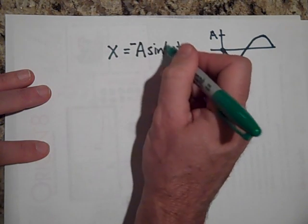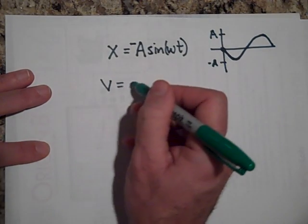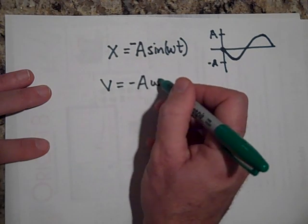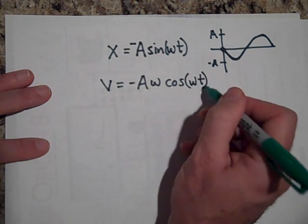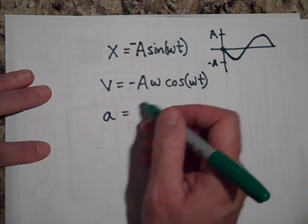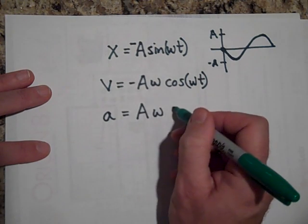Which means if we wanted to get the velocity, the velocity would be negative A omega cosine omega t. And the acceleration would be, got to take the derivative of that. So it'd be A omega squared sine omega t.